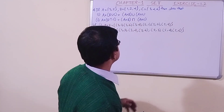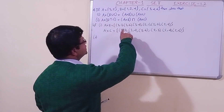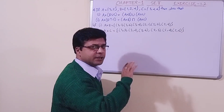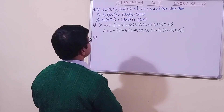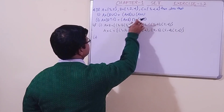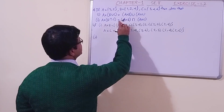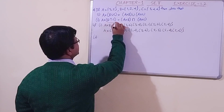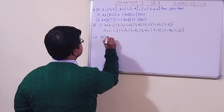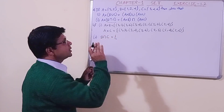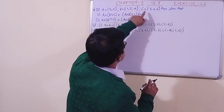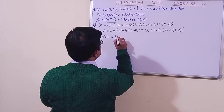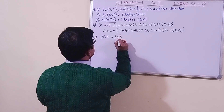Now for the second part of question four, we need to prove A cross (B intersection C) equals (A cross B) intersection (A cross C). A cross B and A cross C are already found, so let us find B intersection C. What is common between B and C? 1 is not there, 2 is not there — only 4 is there. So B intersection C is {4}.